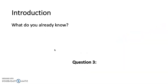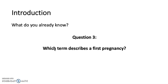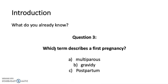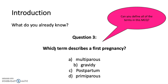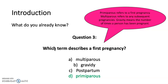Question three: which term describes a first pregnancy? Is it A) multiparous, B) gravidity, C) postpartum, or D) primiparous? Can you define all of these terms? The answer is primiparous. Primiparous means first pregnancy; multiparous is any subsequent pregnancies; gravidity means the number of times a person has been pregnant; and postpartum is after someone has given birth.